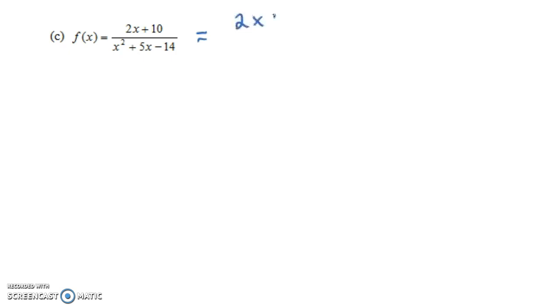So the numerator is 2x plus 10. We don't have to worry about factoring that. You could if you wanted to, you could write that as 2 times the quantity x plus 5. But it's okay to have a 0 up top in the numerator, but we can't have any value of x that makes the denominator be 0. So how do we factor x squared plus 5x minus 14? And factoring is kind of trial and error a lot of times. Notice we're going to have x plus or minus something and x plus or minus something here, because x times x that's going to give us the x squared.